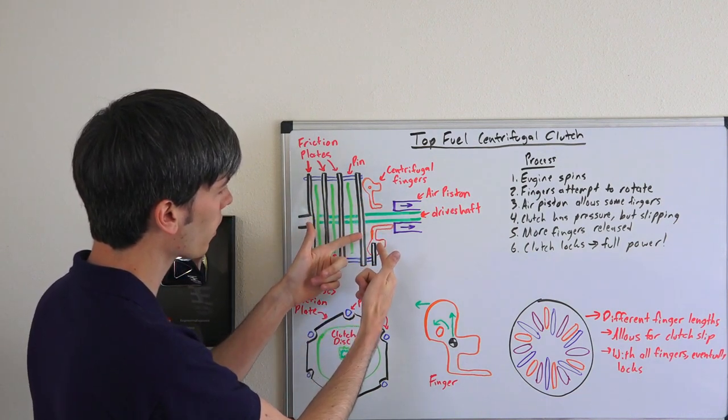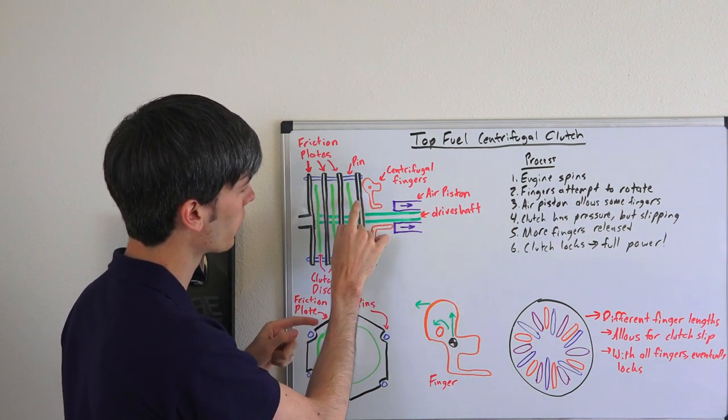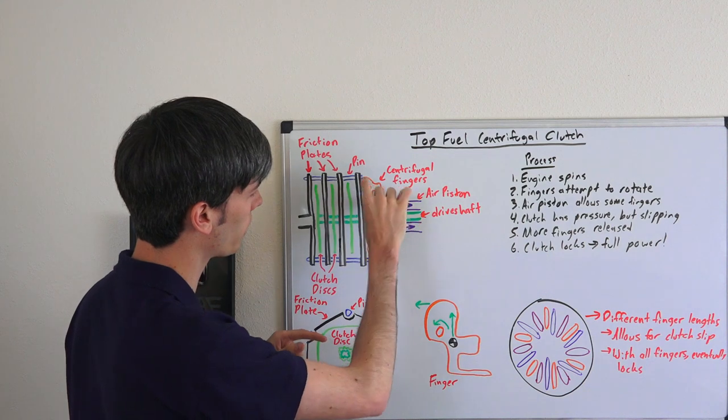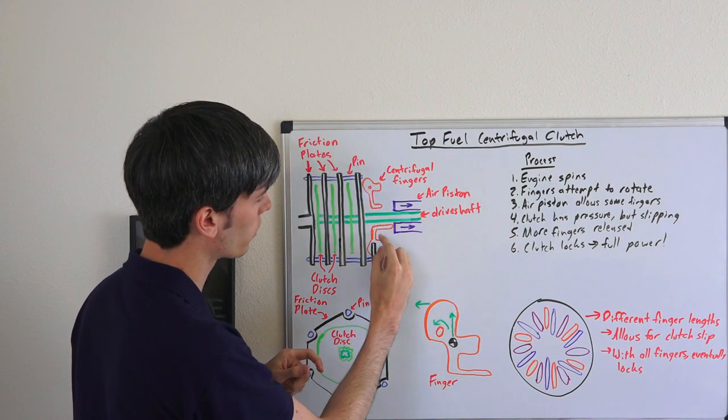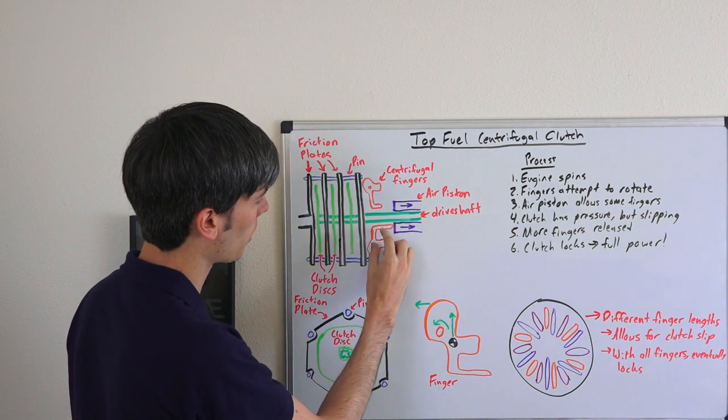As you can see right here, initially if this were to start spinning, this finger would be able to apply pressure to the clutch pack as it doesn't have anything preventing it from rotating, whereas this finger does not have the ability to rotate because it has this air piston blocking it from rotating.